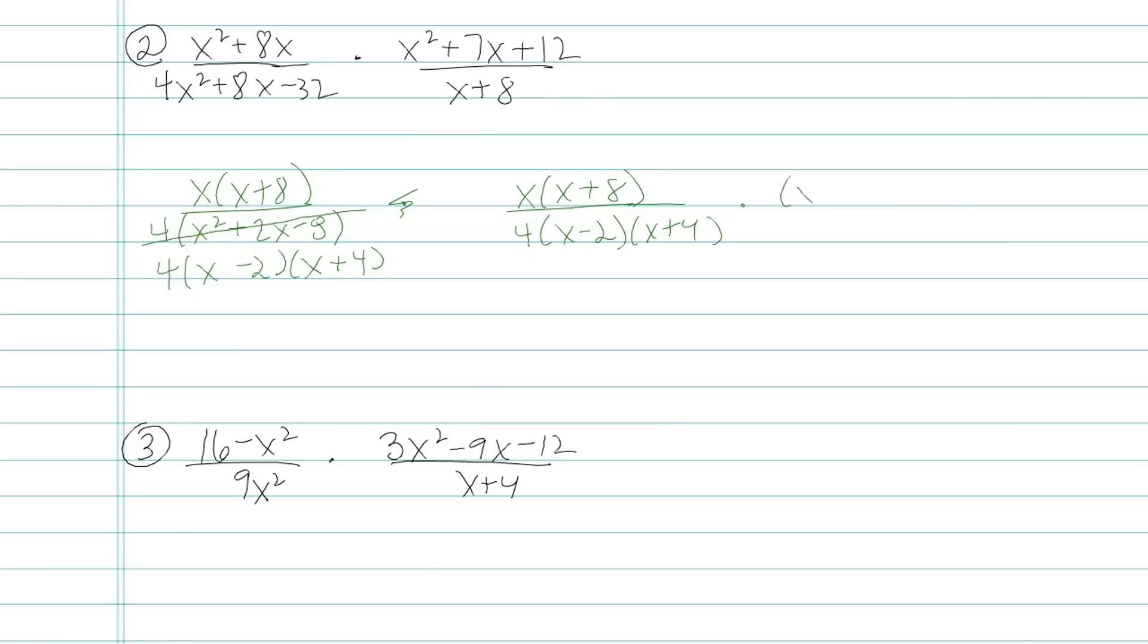Let's look at the second fraction. It factors to x plus 4, x plus 3. And it's all on top of x plus 8. We'll cross out entire factors that are the same on top and bottom. It's okay if they're in different fractions. And I think that's it.